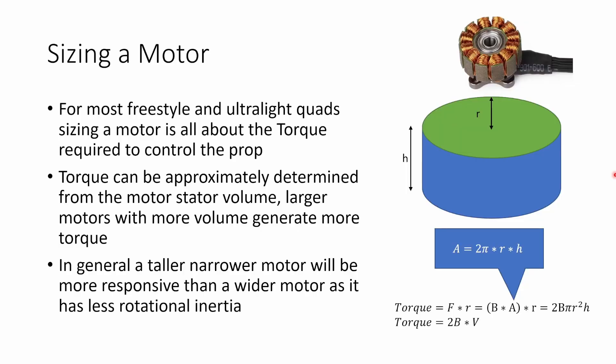Up until now when we've been talking about sizing a motor, we've been talking about typical freestyle quads and ultralight quads. In this application, sizing the motor is all about the torque that motor has and what torque is required to control the prop that you want to spin. The torque of the motor is really important to accelerate and decelerate the prop rapidly so the flight controller can quickly change the thrust produced by each motor to keep the quad stable in the air. For this application, torque can be approximately determined directly from the motor stator volume. Larger motors with more stator volume generate more torque, and we can see why this is by looking at the equation for torque. Torque is the force times distance, so the force exerted by the motor on its rotor multiplied by the radius of that rotor.